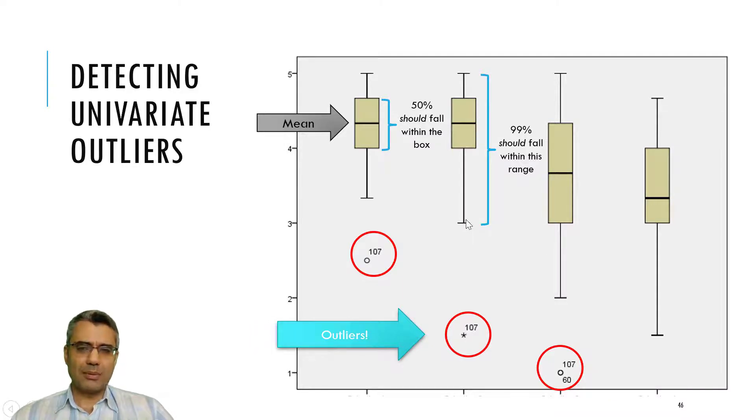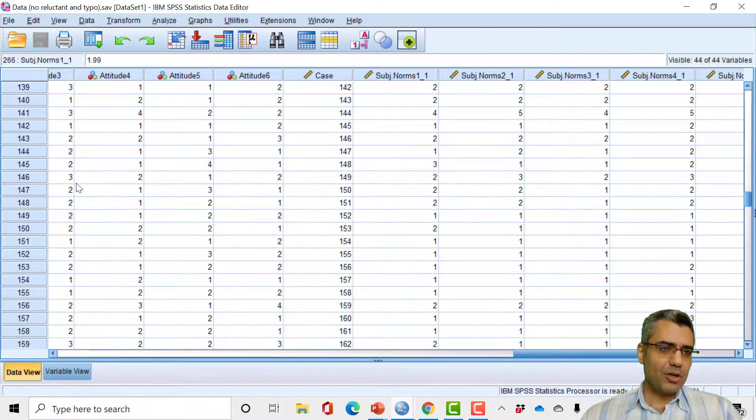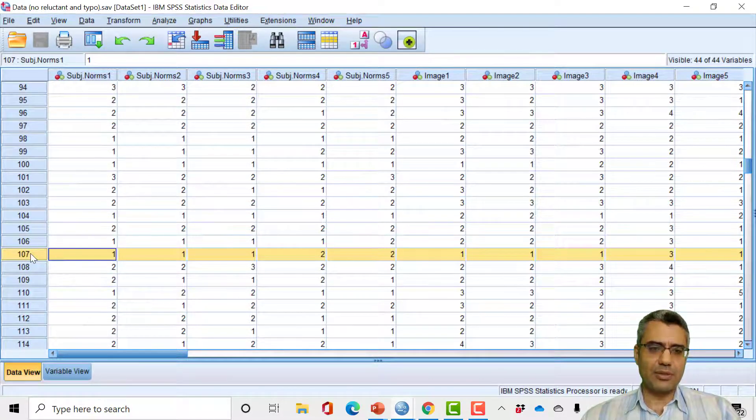For example, here everyone's response, I mean most of the people's responses, is between 3 to 5, and this guy gave 1.5. And here is the same, here is the same. So if I want to remove, I remove case number 107 because these show case numbers. So in my SPSS data file, this is case number 107. So if I want to remove, I remove this case.